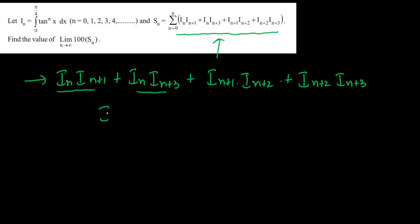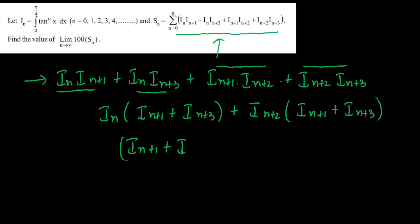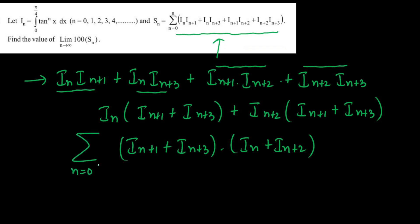In the first two starting terms, I am going to take I(n) common. If you take I(n) common, you will get I(n+1) plus I(n+3). Then in the next two terms, I am going to take I(n+2) common, and you will get inside I(n+1) plus I(n+3). Now you can take this common term, and you will get I(n+1) plus I(n+3), times I(n) plus I(n+2). That means we need to calculate this summation, where n is varying from 0 to n, and later we will take the limit. The index difference is 2 in both factors, so we can use the reduction formula.